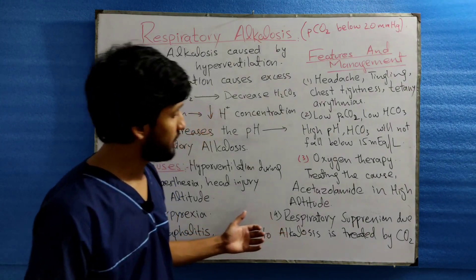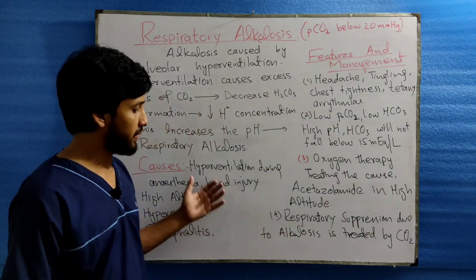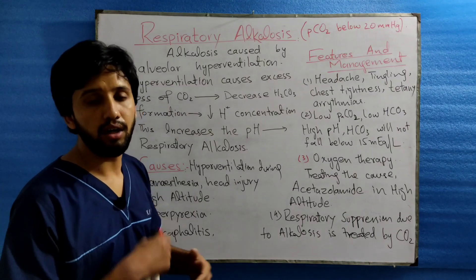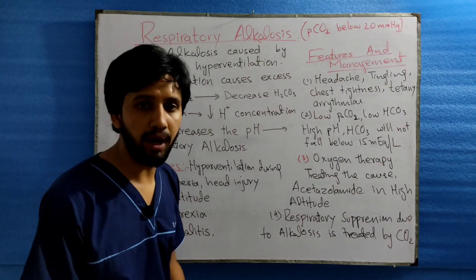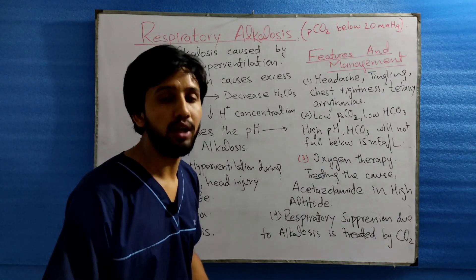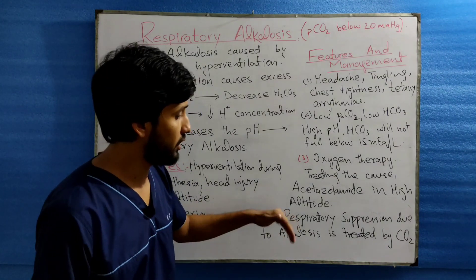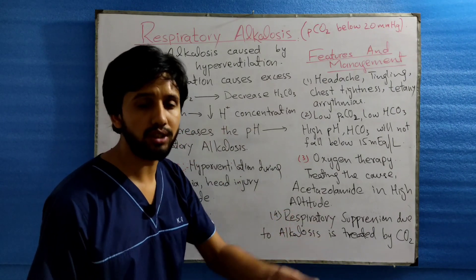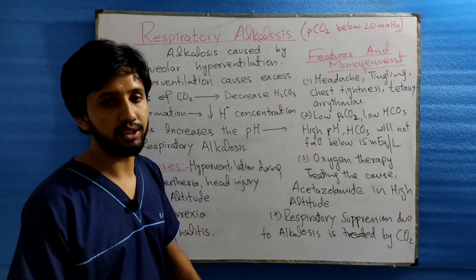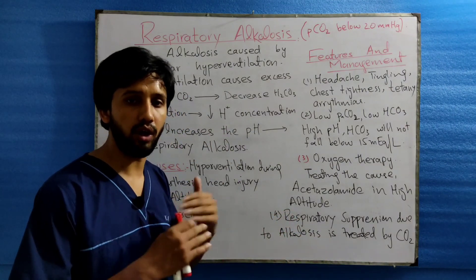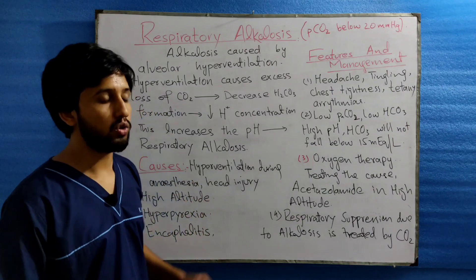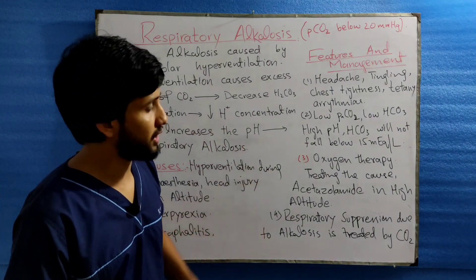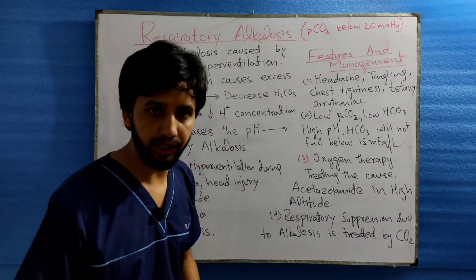Respiratory suppression due to alkalosis is treated by administering CO2, so that the increased amount lost during hyperventilation is normalized. This is how the respiratory alkalosis patient is treated.